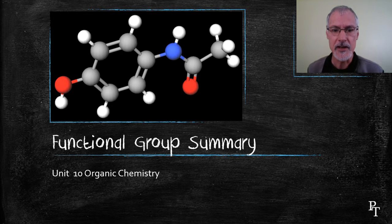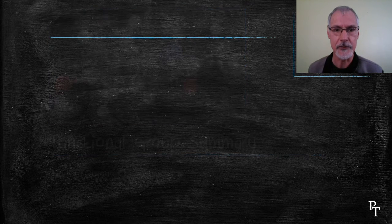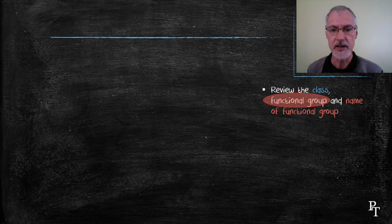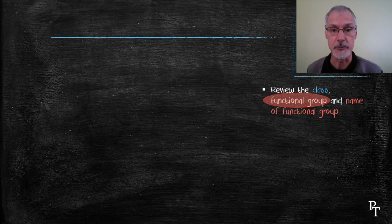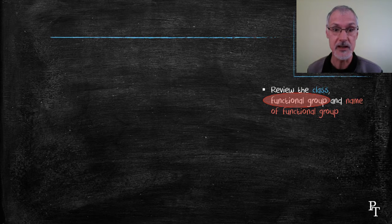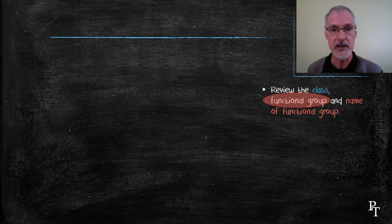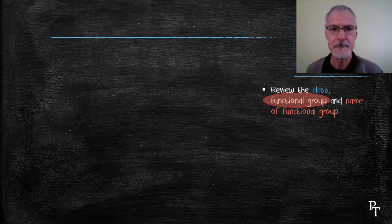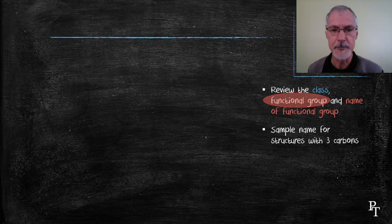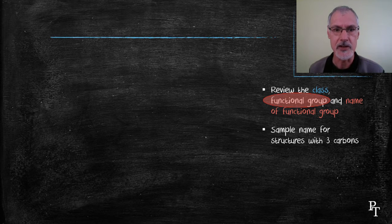Today I just want to do a summary of all of those functional groups. I want to review the class or family of the organic chemical, be able to clearly identify its functional group and also state the name of the functional group. In some cases the class and the functional group name are the same, in some cases they're different and you need to take careful note of that. I'll also quickly look at naming some of the chemicals with up to three carbons in them and also provide their condensed structures.